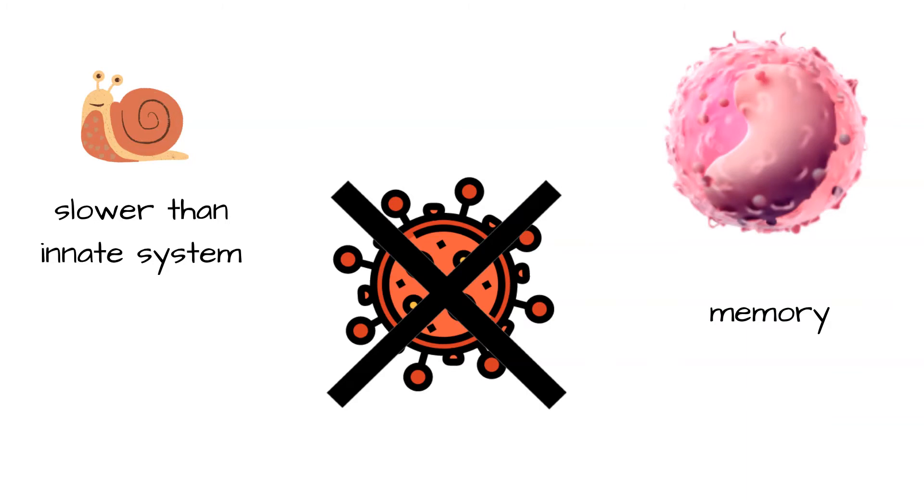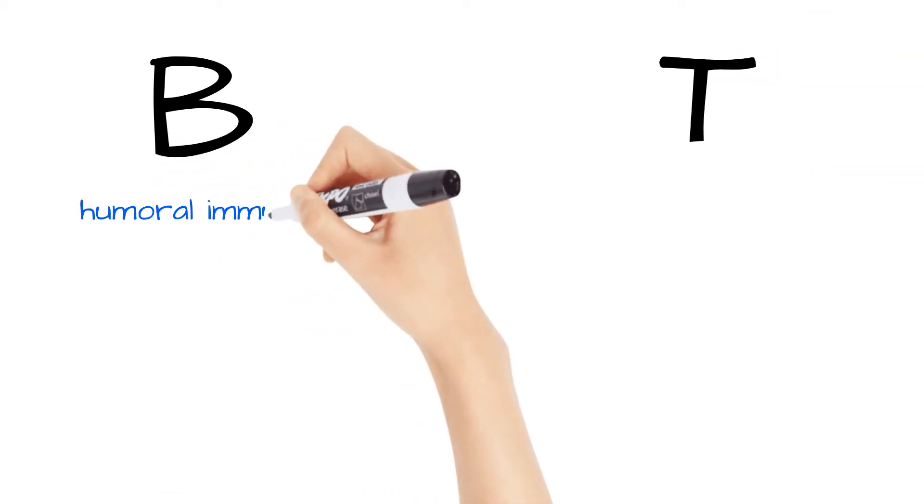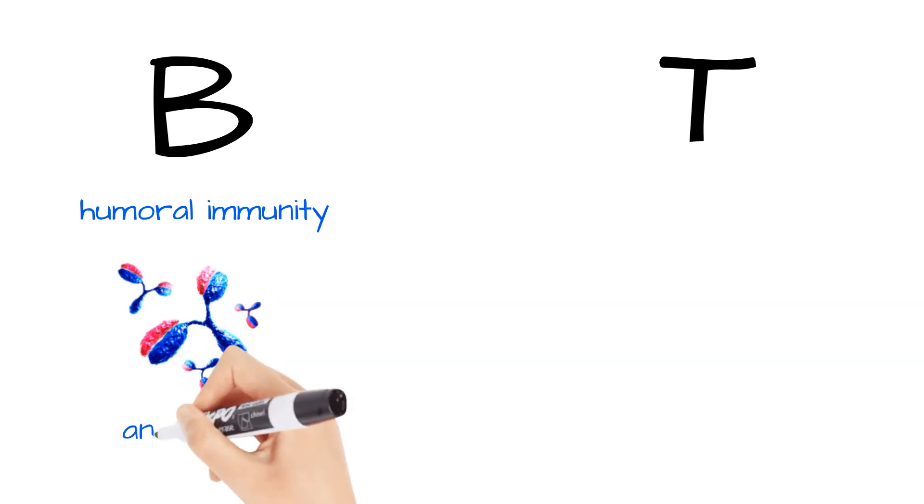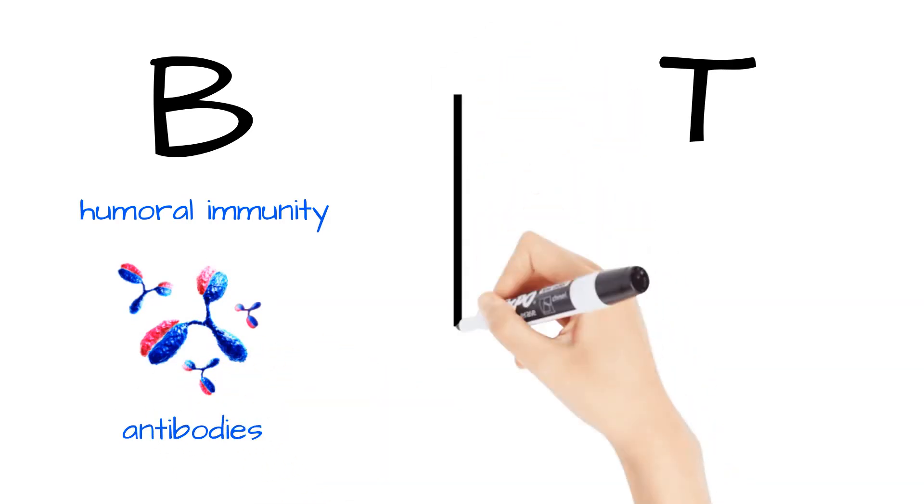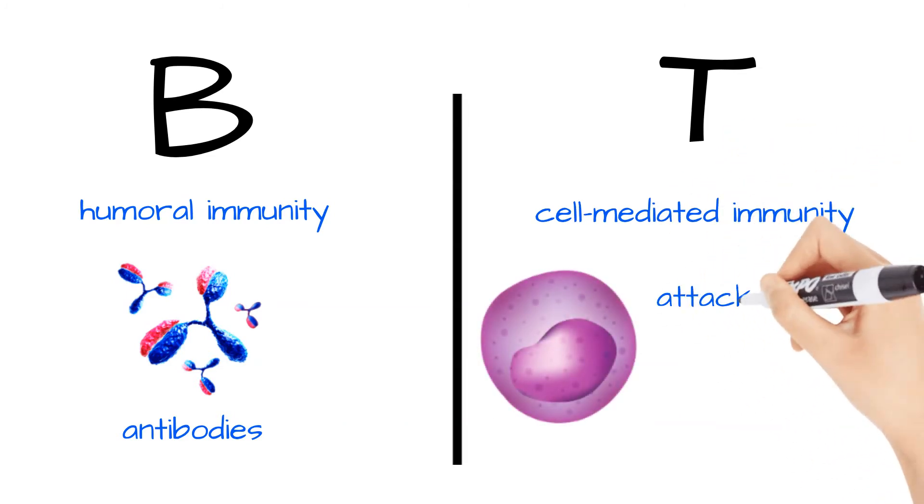The adaptive response is mediated by two kinds of lymphocytes: B cells and T cells. B cells are responsible for the humoral immunity response that's overseen by circulating antibodies. T cells are responsible for cell-mediated immunity, in which they eliminate targets directly or stimulate various white blood cells.